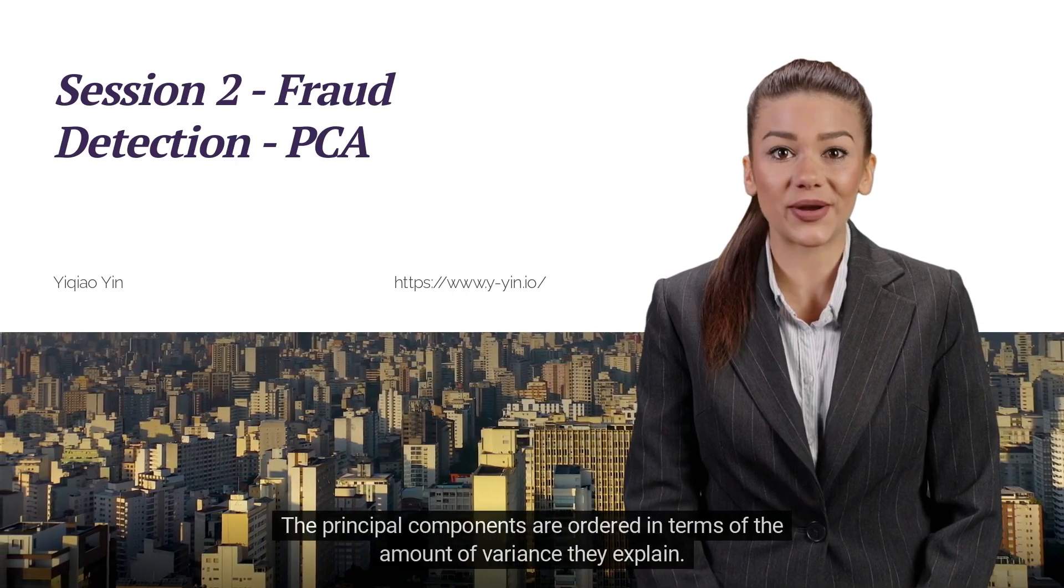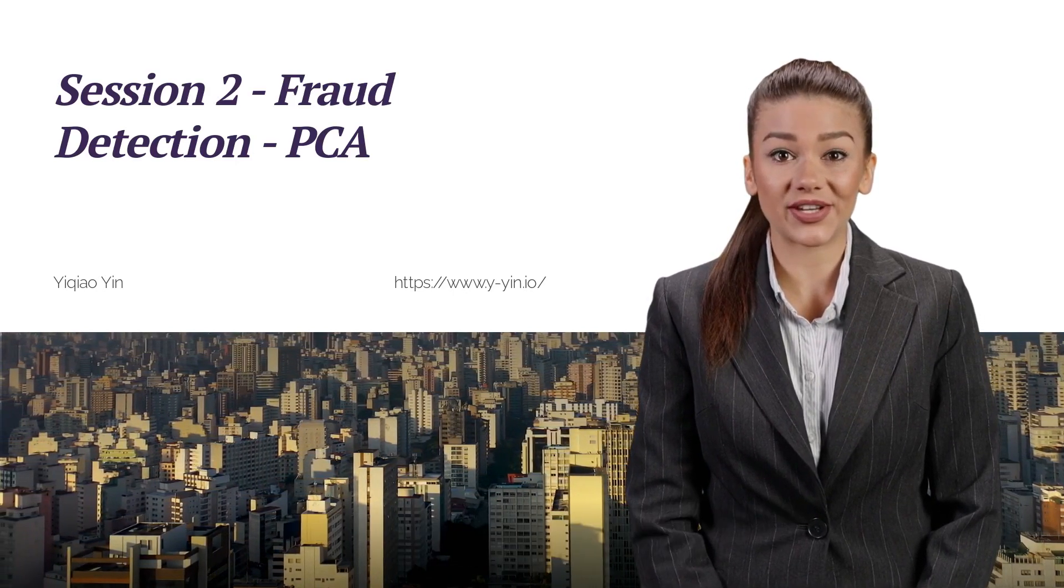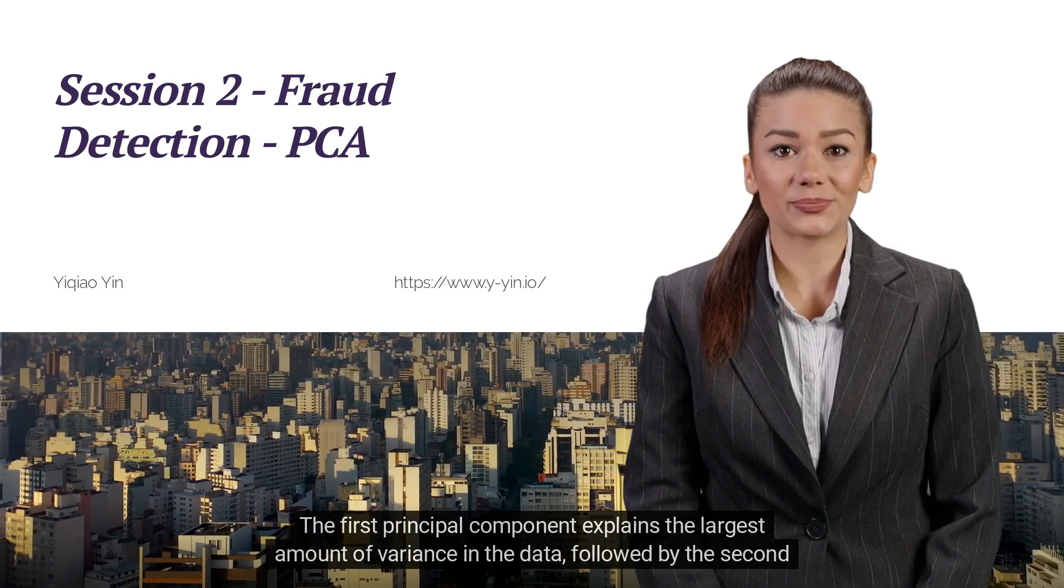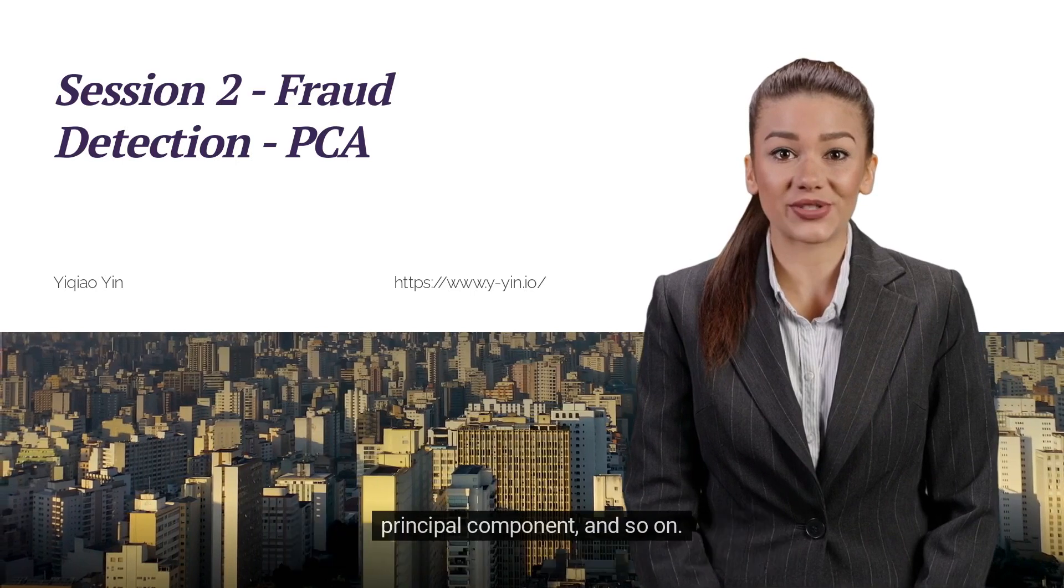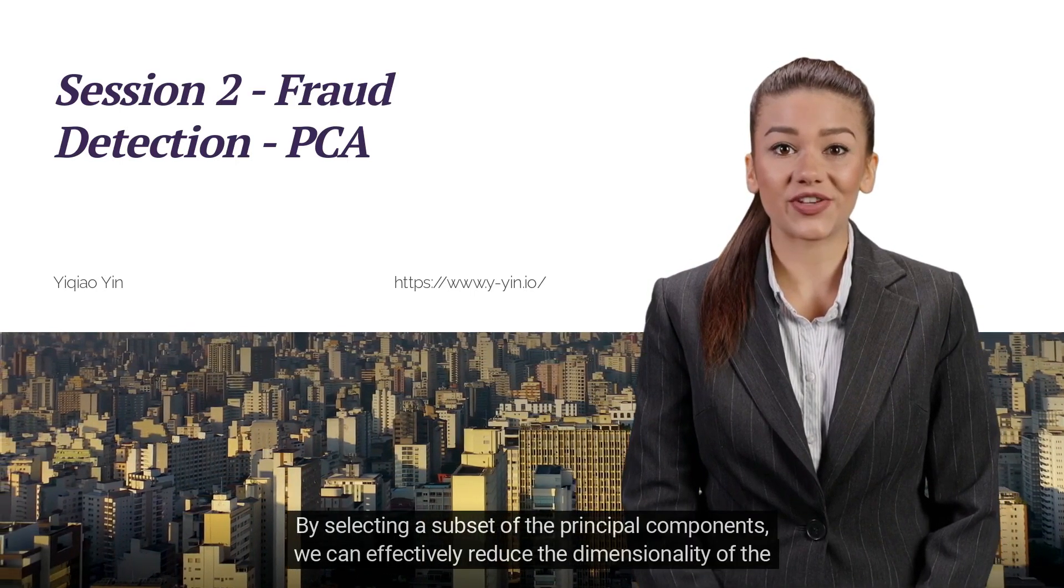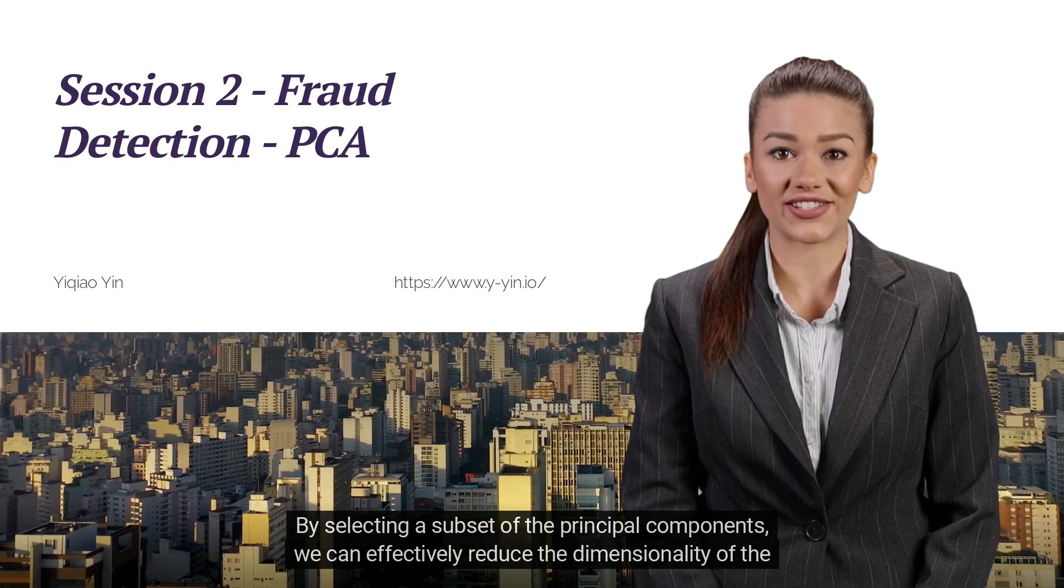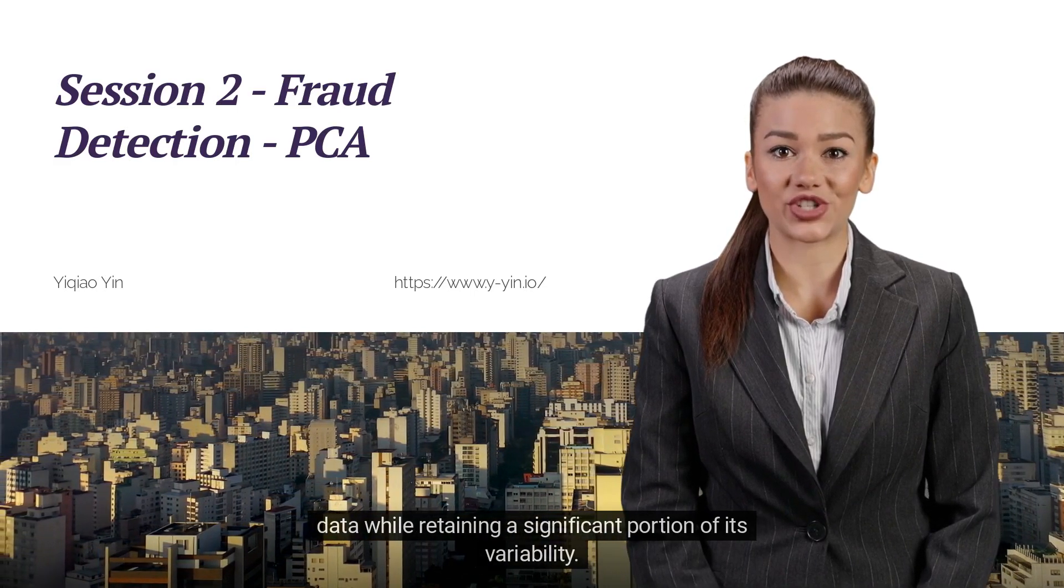The principal components are ordered in terms of the amount of variance they explain. The first principal component explains the largest amount of variance in the data, followed by the second principal component, and so on. By selecting a subset of the principal components, we can effectively reduce the dimensionality of the data while retaining a significant portion of its variability.